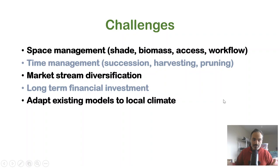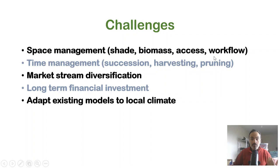The challenges when integrating forest garden or agroforestry ideas into a market gardening scenario are several. First, space management: we want to manage shade without using too much space for biomass production. Trees also present access challenges for both machinery and humans, and workflow challenges like harvesting vegetables between trees and pruning trees between the vegetables.